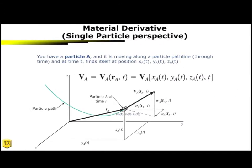So when we're talking about the material derivative, we have to think of it from a single particle perspective, where we have some particle that's moving along a path line through time, and it finds itself in a position A with coordinates X, Y, and Z. So that's kind of what we're going to be starting with, is dealing with this particle perspective, and we still are dealing with our velocity field here.